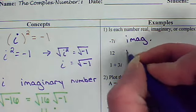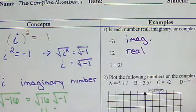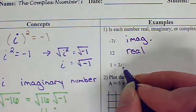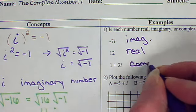12. Oh, I know that one. That's a real number. 1 plus 3i. I've got a real plus an imaginary. That's complex.